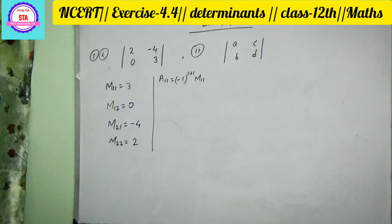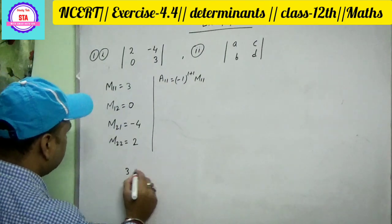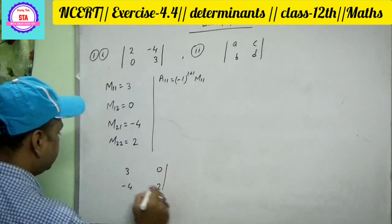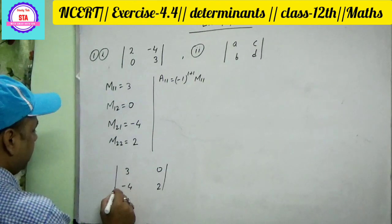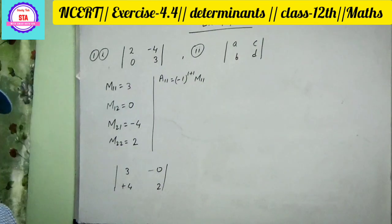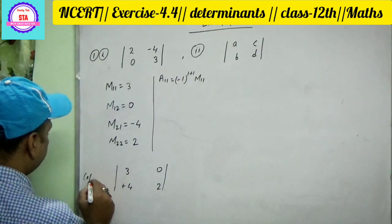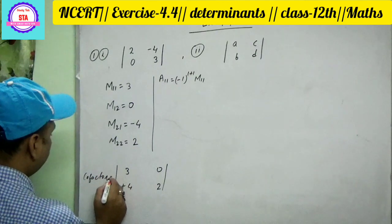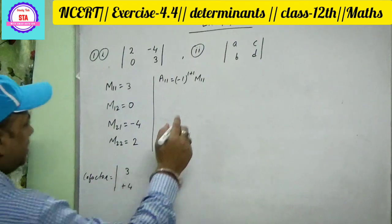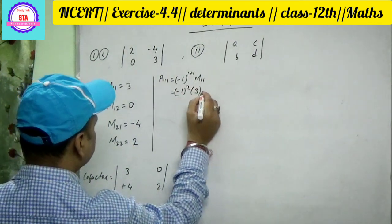This is a short trick — you can change the value. The matrix entries are 3, 0, minus 4, 2. These are the cofactors. This formula: A equals 3.